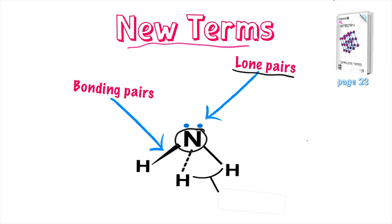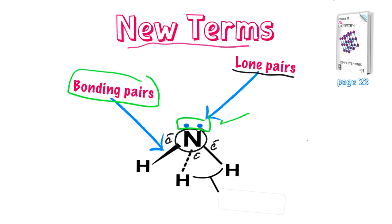For instance, nitrogen has three bonding pairs of electrons — three electrons involved in a covalent bond — plus an additional pair of unshared electrons. Those unshared electrons are highly involved in the shape of a molecule because they exert a higher degree of repulsion than the bonding pairs, as they are quite more distant from the center of the nitrogen atom. So the shape of a molecule is determined by both the bonding pairs and the lone pairs of electrons. A bond angle is the angle between two adjacent covalent bonds, and it is influenced by both bonding pairs and lone pairs.